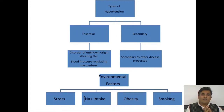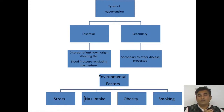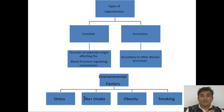Environmental factors also contribute to secondary hypertension. After chronic exposure to stress — office stress or other stress — there is a persistent increase in central sympathetic outflow. This, along with increased sodium intake, obesity, and smoking, are the environmental factors that lead to hypertension.